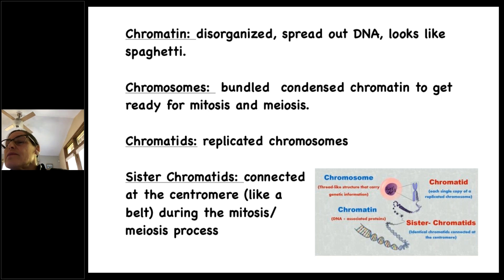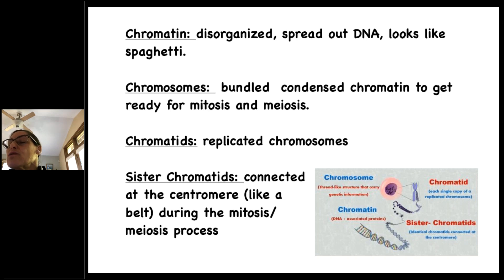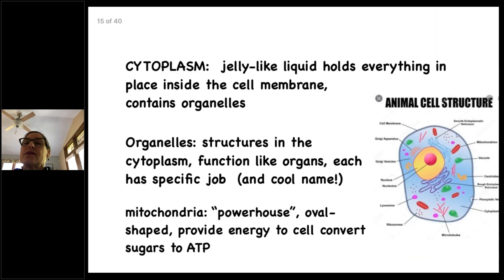In the diagram you can see the DNA double helix ladder, and the nucleus is shown in purple with the pink being the cell. Chromosomes get another name when they replicate — a chromatid — which looks like a butterfly or a hair bow. Each chromatid is a single copy of a replicated chromosome. Then you have a sister chromatid, and they're connected like a belt during the mitosis and meiosis process. We'll talk more about that after covering all the parts of the cell.